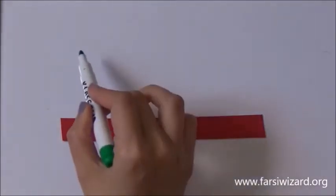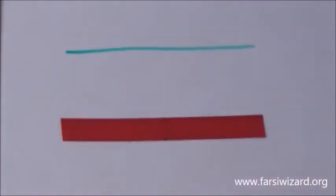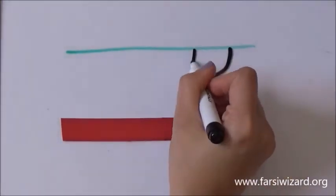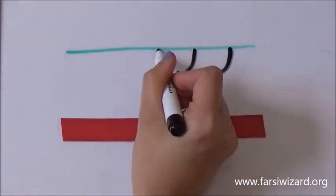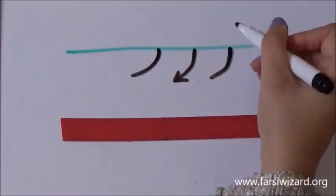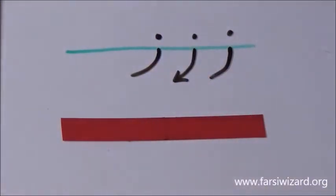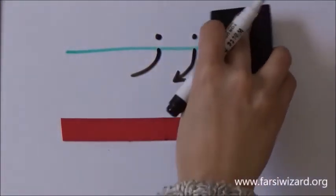All right next one. This one will be the letter RE the equivalent of R in English. It looks like a half a curve under the line. Very easy. If you put one dot on top of it however you will get Z. Another equivalent of Z in English.